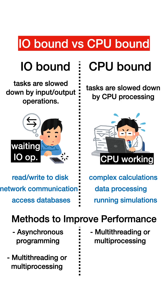For CPU-bound tasks, we can use multi-threading or multi-processing, which distributes the computational load across multiple CPU cores, enhancing the processing speed. Another method is algorithm optimization to reduce the computational complexity.